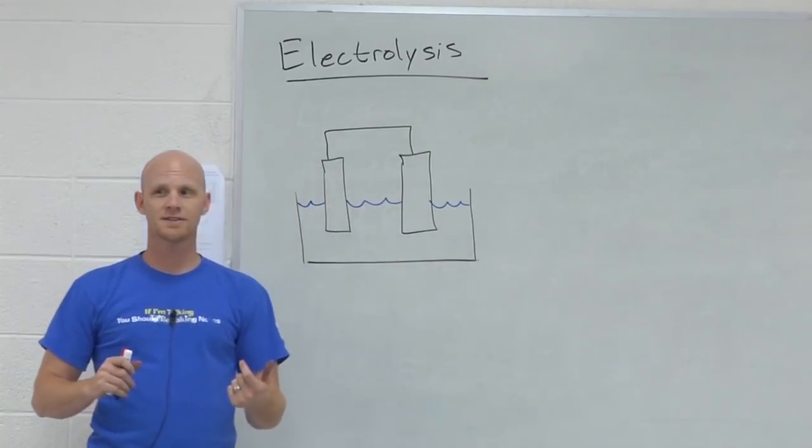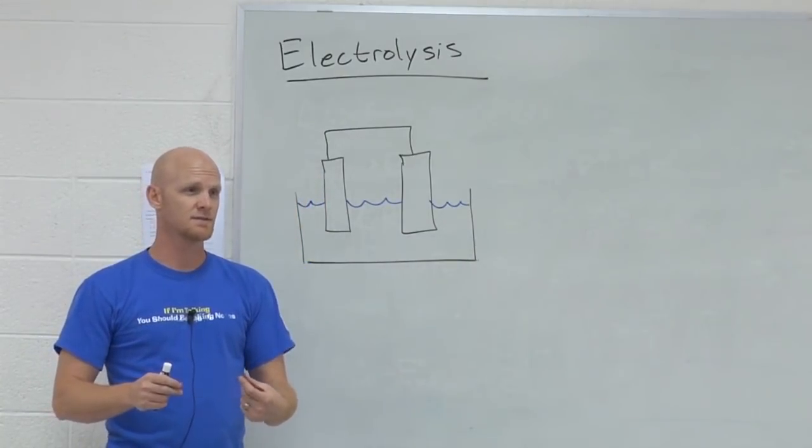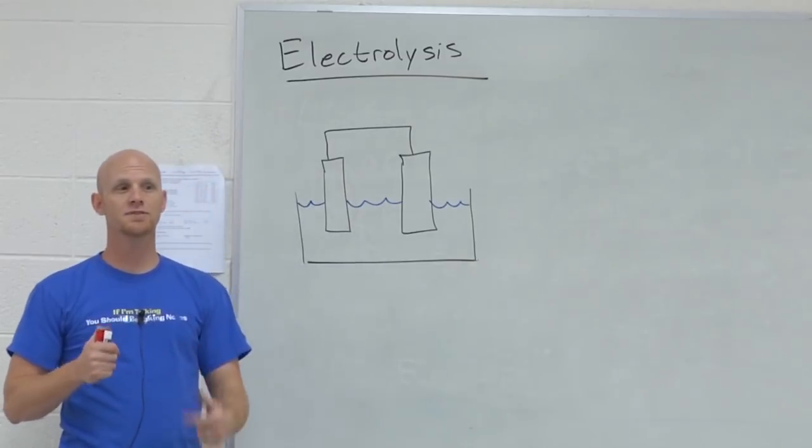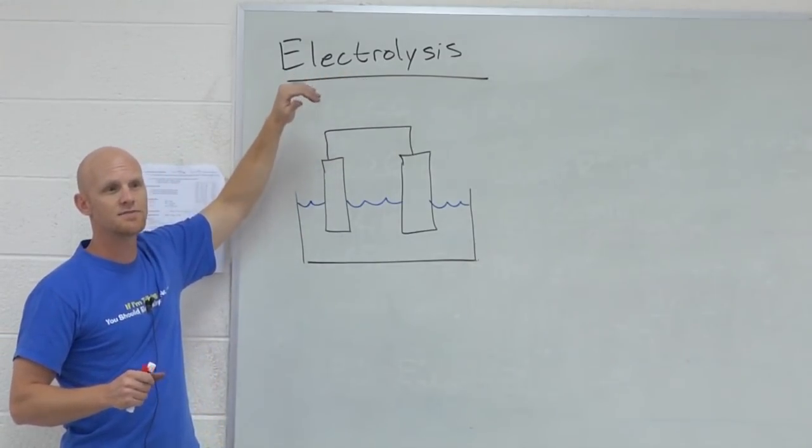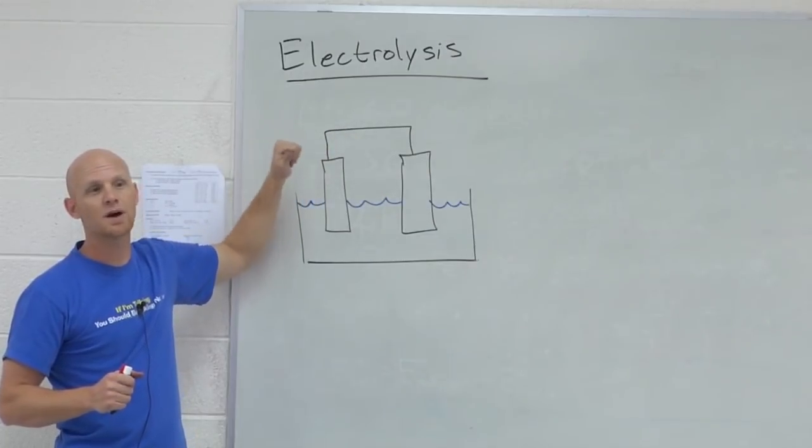Now your galvanic cells, your voltaic cells, those are spontaneous ones. So they have positive voltages, they produce electricity. But again, your electrolytic cells, electrolysis, they have negative voltages, they use up electricity.